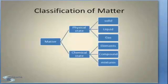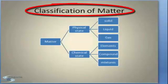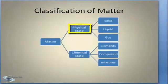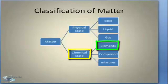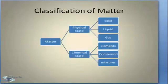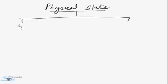Now friends, let's see what is the classification of matter. The matter can be classified by their properties, that is physical property and chemical property. We will be studying physical state and chemical state. In physical state, we study solid, liquid, gas. In chemical state, we will be studying elements, compound and mixture. Let's first see what is physical state. We study solid, liquid and gas.